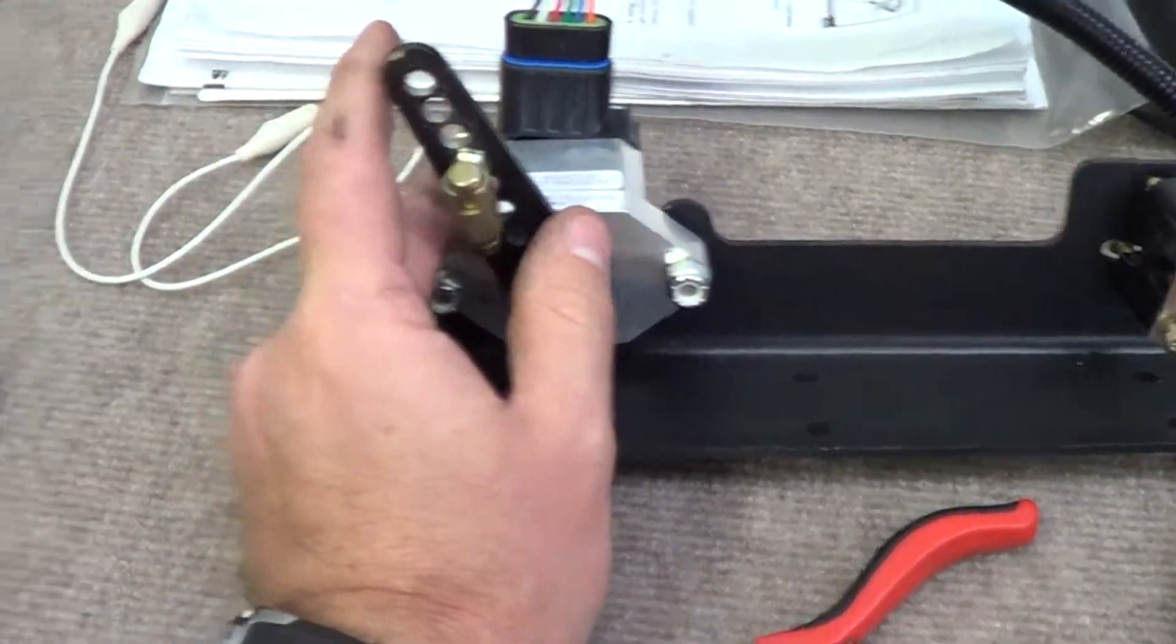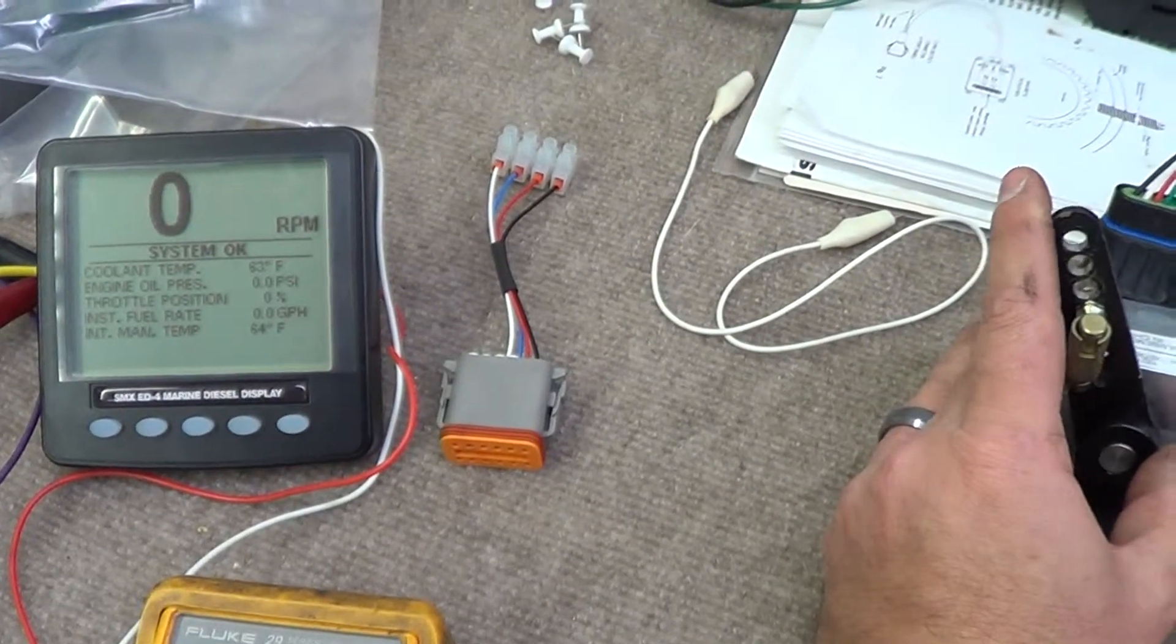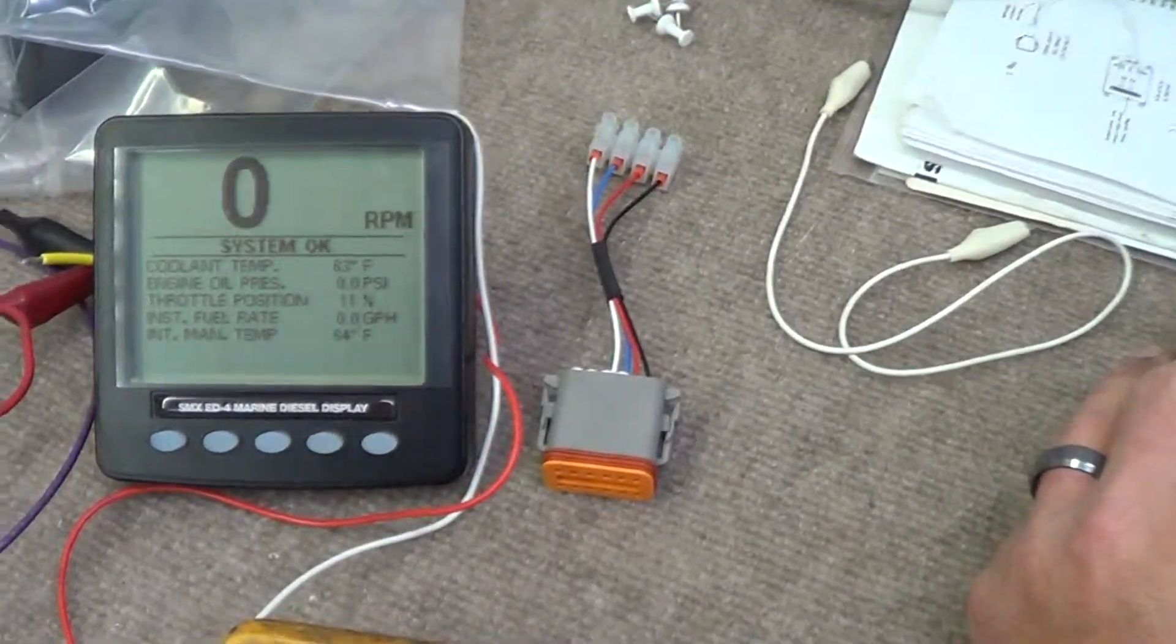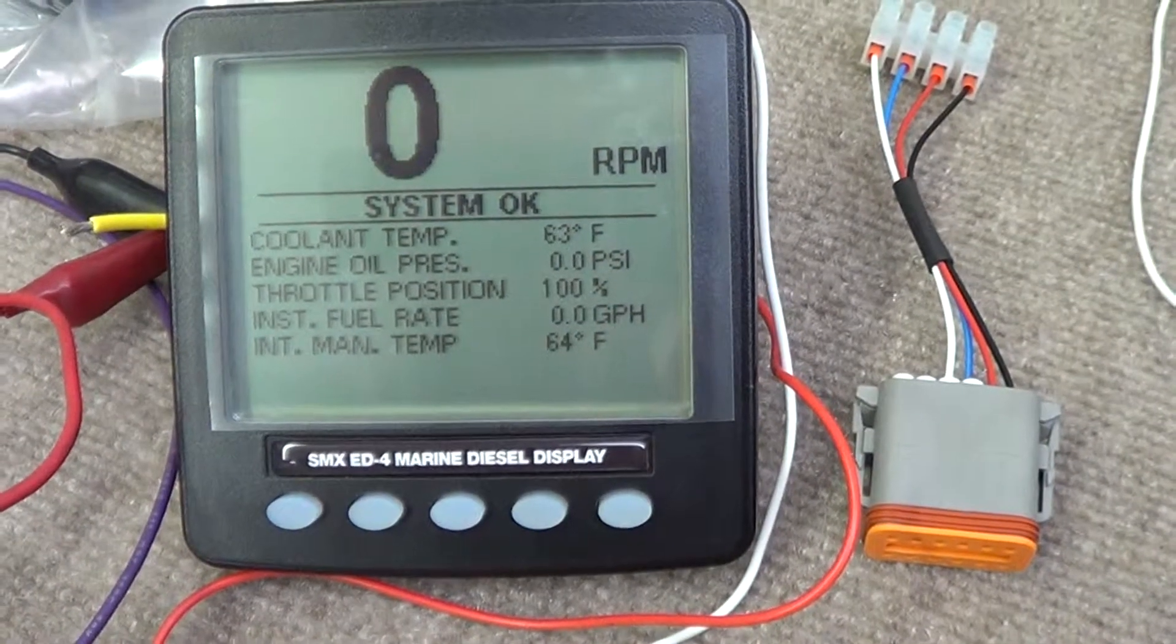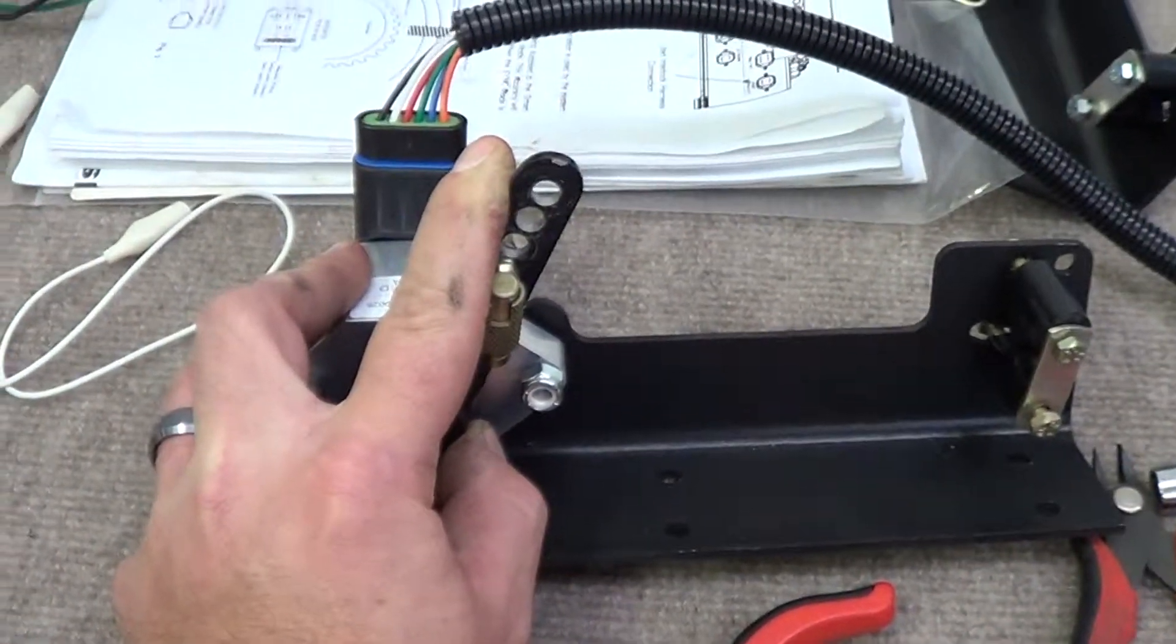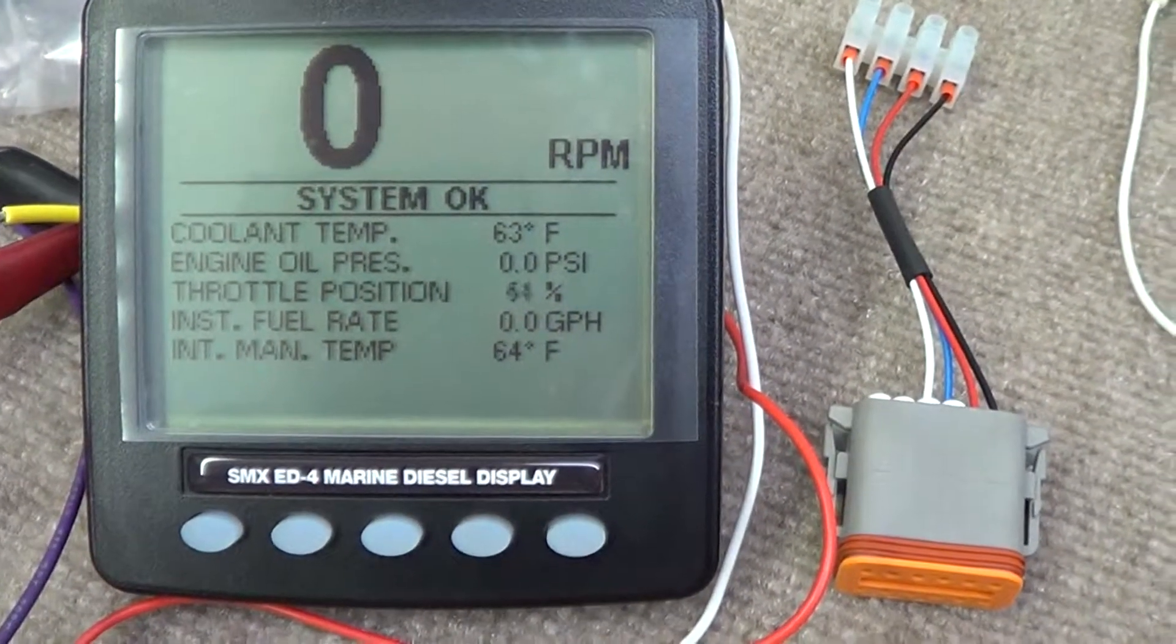And if you notice on the display, I'm going to go ahead and move this lever. On the display here, you'll see that we're starting to get throttle input. And right now you can see here we're at 100%. We'll let this start going down. You'll see that the throttle is going down here.